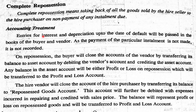How is the accounting treatment done? Entries for interest and depreciation up to the date of default will be passed in the books of the buyer and the vendor. We have already explained that accounting records are to be made in the books of the buyer as well as in the books of the vendor. Interest and depreciation up to the date of default should be recorded.